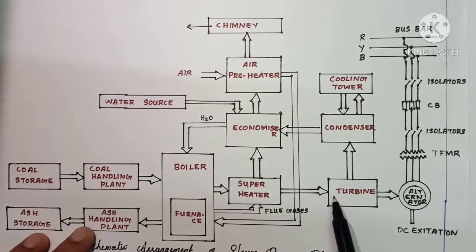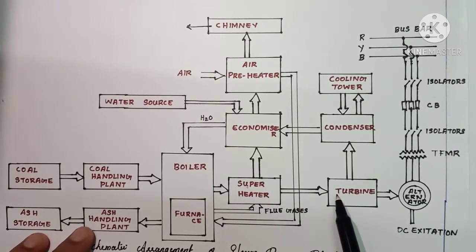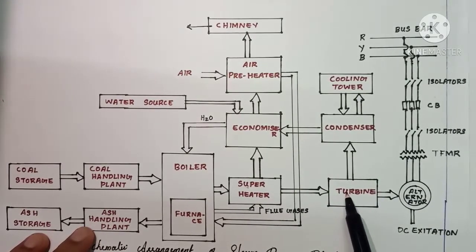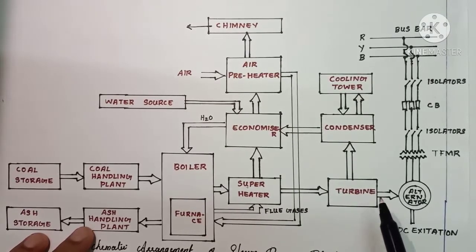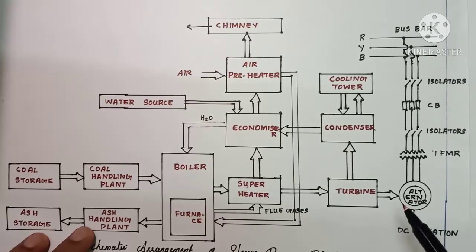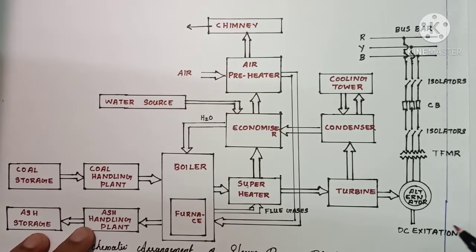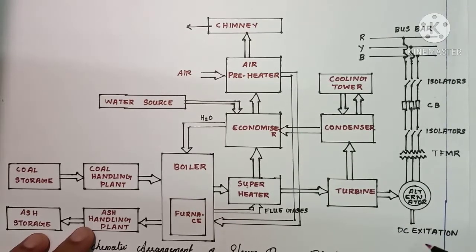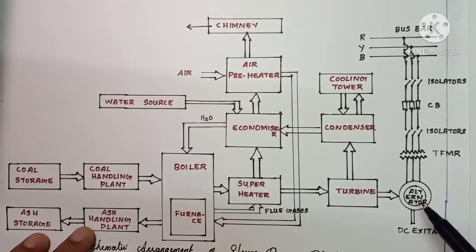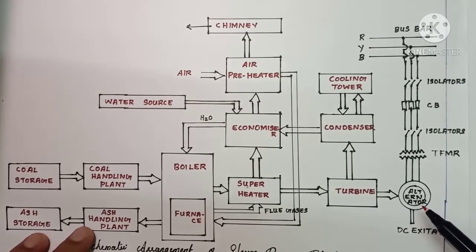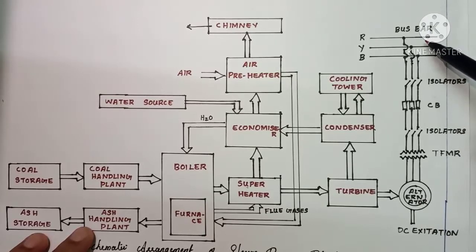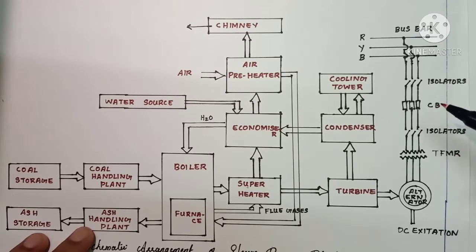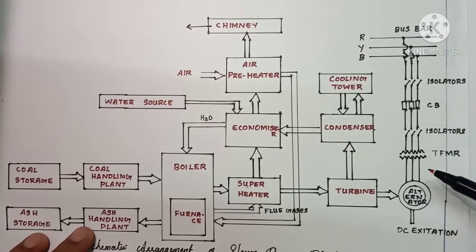At the turbine blades, the steam energy is converted into mechanical energy. The turbine shaft is directly coupled to the alternator, causing it to rotate. The mechanical energy of the turbine is thus converted into electrical energy at the alternator.